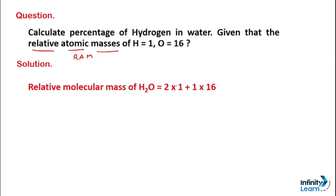So friends, the relative molecular mass of water will be 2×1 + 1×16. Solving this gives us 2 + 16 = 18. That means the relative molecular mass of water is 18 atomic mass units.